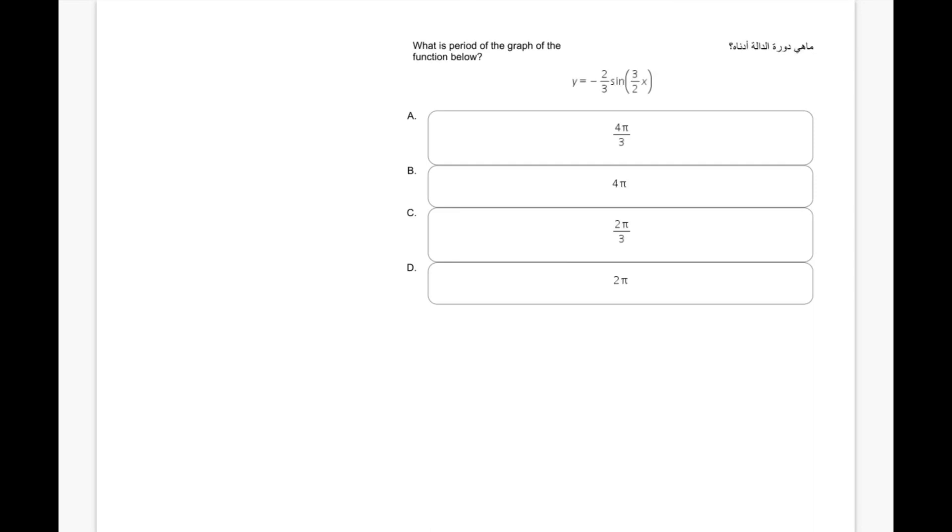So we do have a problem straight from the EMSAT Mathematics Examination. What is the period of the graph of the function below? y equals minus 2 over 3 sine 3 over 2 x.